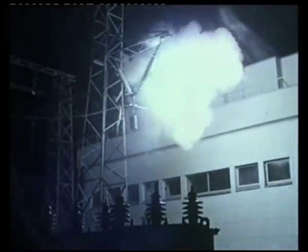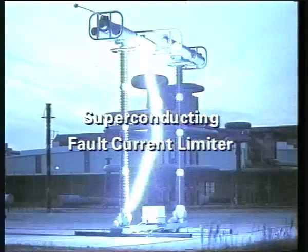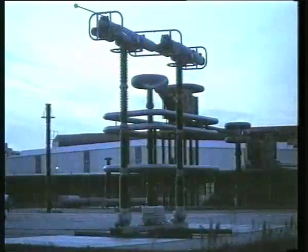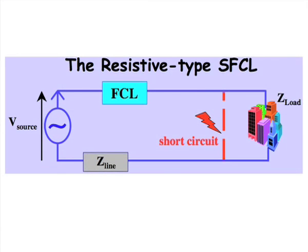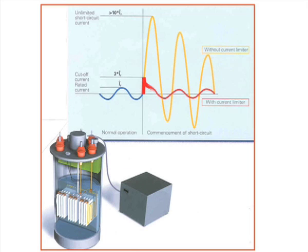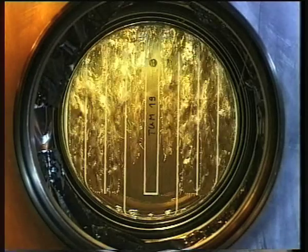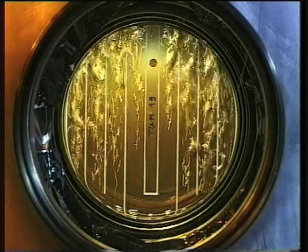Current limiters — this is not an easy technique, but it's a very exciting technology. Growing power demand, increasing interconnection of the power systems, and increasing connection of decentralized generation leads to increasing short circuit currents. The blackout on 14 August 2003 caused the loss of $30 million per hour. This could be easily prevented if the superconducting fault current limiter would be used.